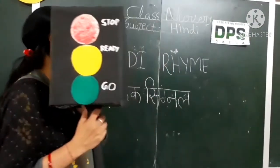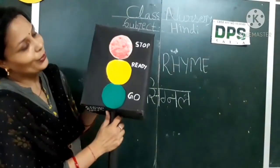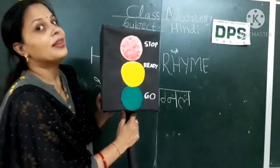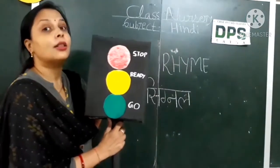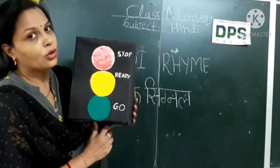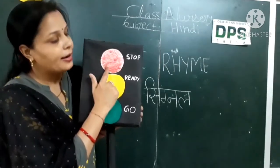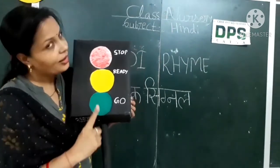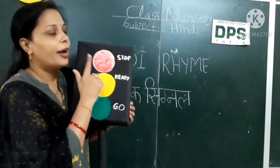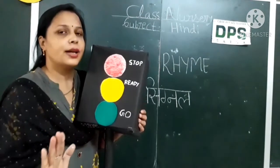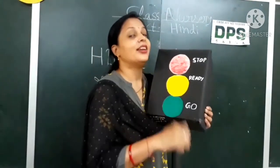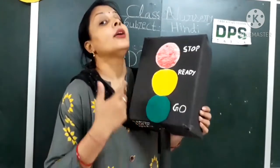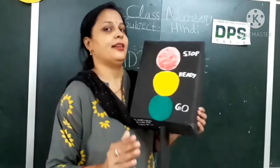What is traffic signal? It has three lights — red light, yellow light and green light. When it is red light, we stop the car and stop the vehicle. Yellow light means we are ready. When it is green light, it means we can go.